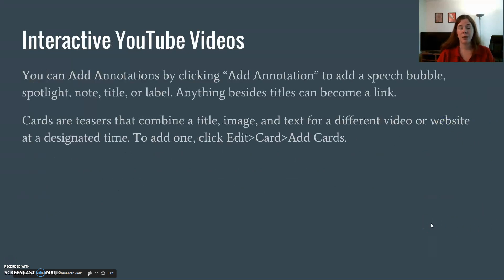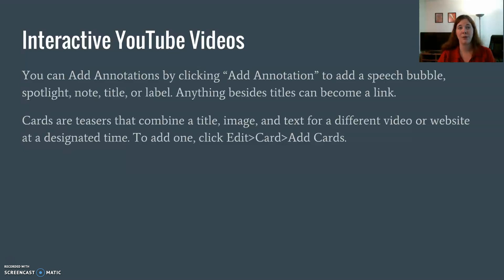You can make YouTube videos interactive by adding either annotations or cards. These are essentially those pop-ups that are not advertisements. You can add an annotation by clicking 'add annotation' to add a speech bubble, a spotlight, a note, a title, or a label. All of those except for titles can be links to something else — to another video, to another site — and you can have the kids click on that for more information on whatever topic you're working on and have them research more about the video.